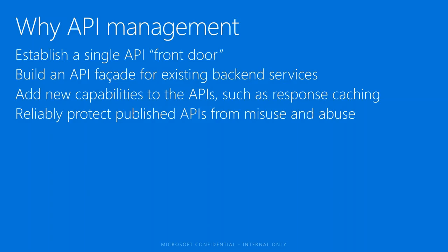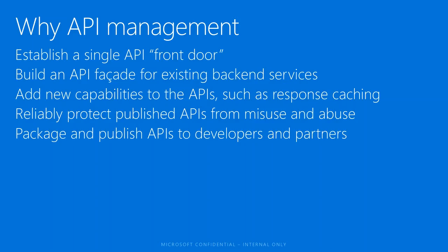Security is a very important concern when exposing your backend. For example, a developer with a bug in their program might call your API millions of times per second, bringing down your backend and impacting other customers. With API management, you can set a quota for each developer — for example, allowing one million API calls per month — which helps protect your APIs from misuse and abuse. You can also package and publish APIs and set visibility to different groups of developers or partners.